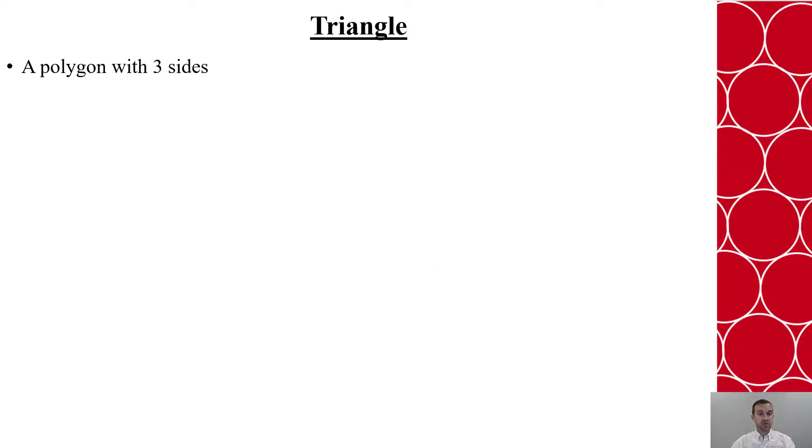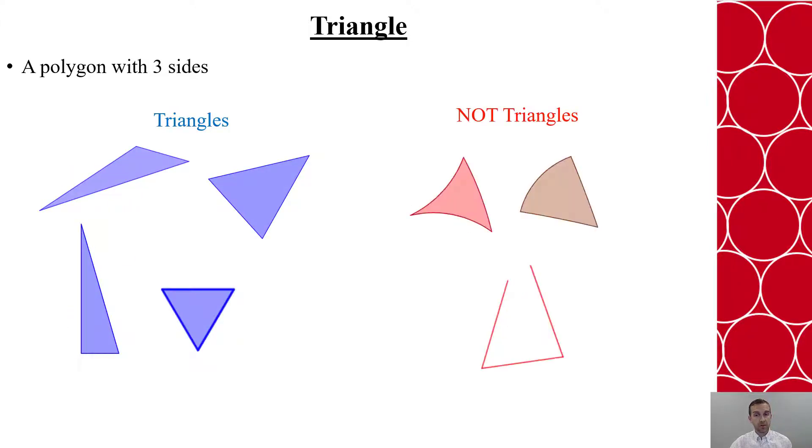In this video, we'll discuss triangles. A triangle is a polygon with three sides. Let's compare triangles to not triangles. Here we have four triangles. Here we have three that are not triangles. The triangles are all closed, connected, and have three sides. Whereas the not triangles, we have one that's open, and then the other two have curves to them. So the sides have to be segments since it is a polygon.